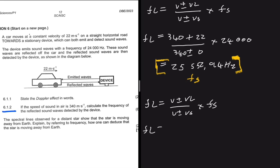That will be equal to 340. Now our listener is the device, which we know is stationary, so we have plus or minus zero divided by 340. And now our sound source is moving towards it, the car, so we have 340 minus 22.